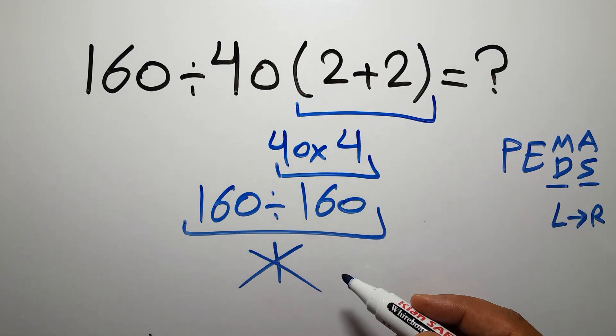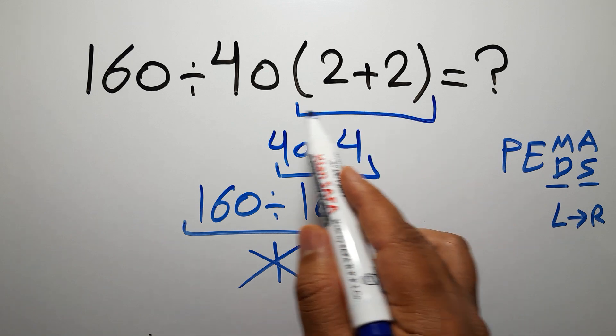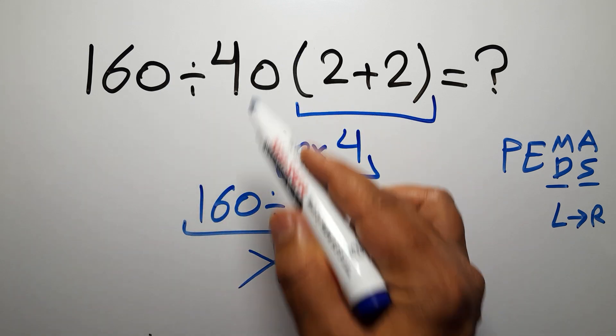So here, first we have to do these parentheses. And after these parentheses, we have one division and one multiplication.